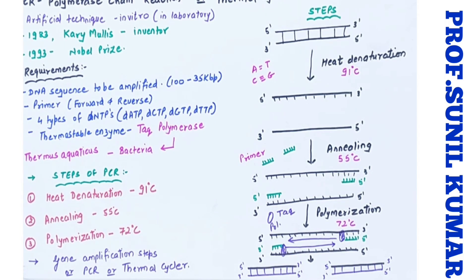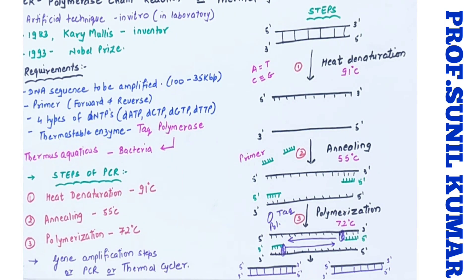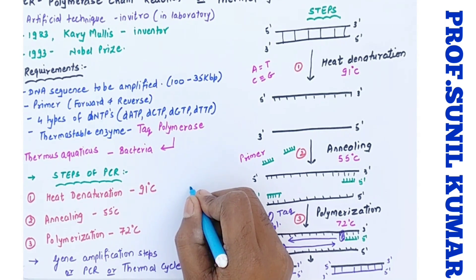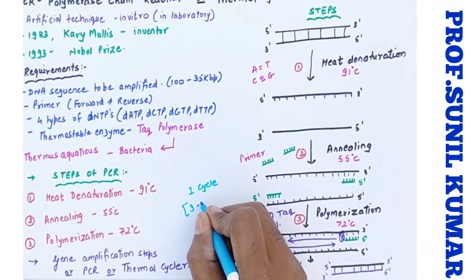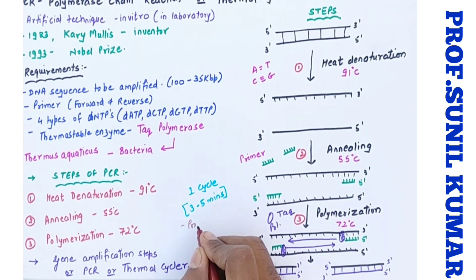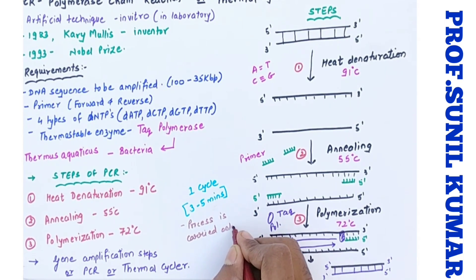What is most important, the sequence of the reaction plays a very important role here. And for completion of one cycle, three to five minutes are required and the cycle is repeated only for 30 cycles. It means for 30 cycles we do DNA replication because after that the reliability decreases.